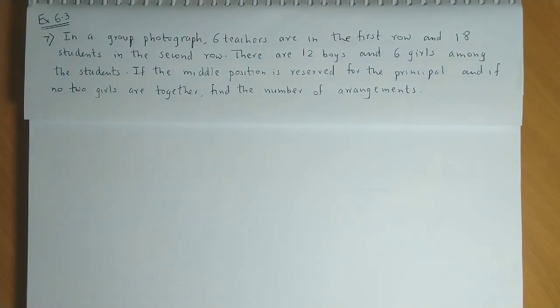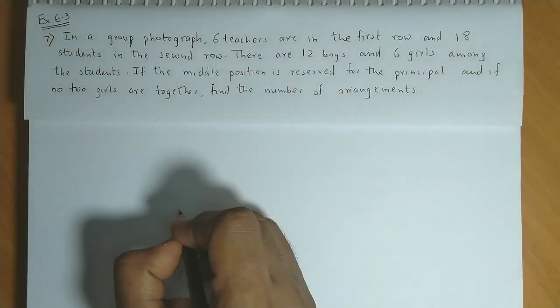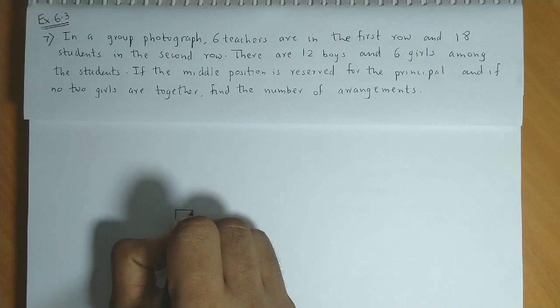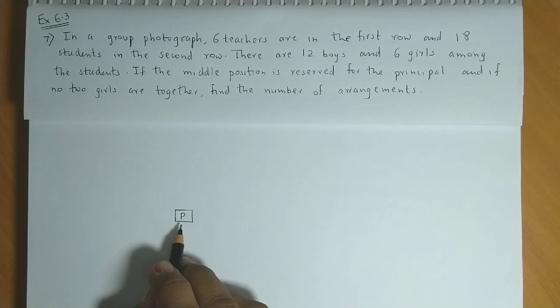First, let's see the arrangement in the first row, which we have to fix the principal and teachers. The principal must occupy the middlemost seat, so the principal could be arranged in one way.